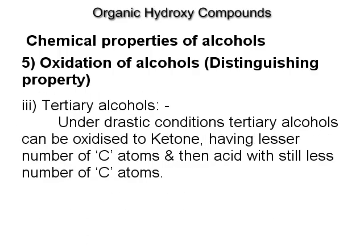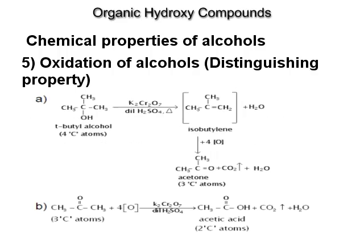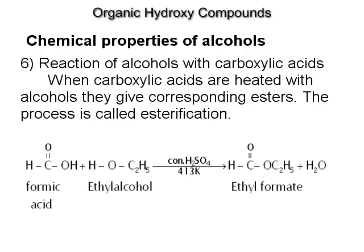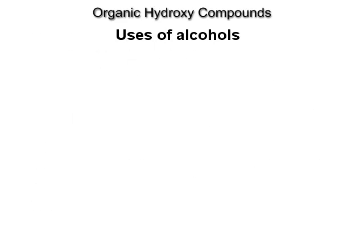Tertiary alcohols. Under drastic conditions, tertiary alcohols can be oxidized to a ketone having a lesser number of carbon atoms, and then to an acid with still fewer carbon atoms. Reaction of alcohols with carboxylic acids: when carboxylic acids are heated with alcohols, they give corresponding esters. This process is called esterification. For example, formic acid plus ethyl alcohol gives ethyl formate.